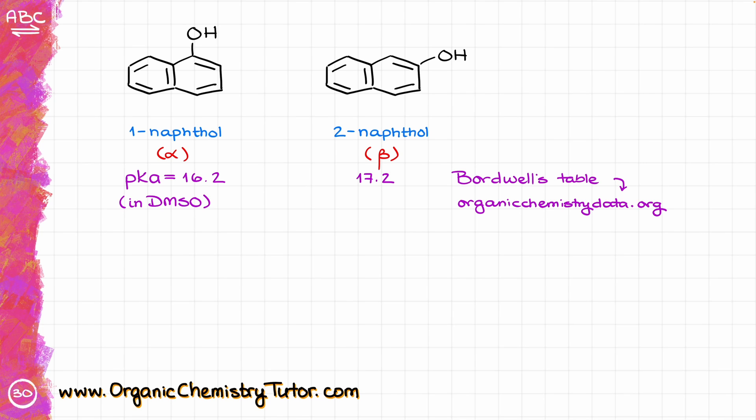So, is one unit on the pKa scale a significant difference? Yes, it is. The pKa scale is logarithmic, which means that a single unit in the pKa scale equals to an order of magnitude difference. In other words, 1-naphthol is 10 times more acidic than 2-naphthol. So why such a drastic difference? Why do two seemingly similar looking molecules have a significant difference in the pKa values?